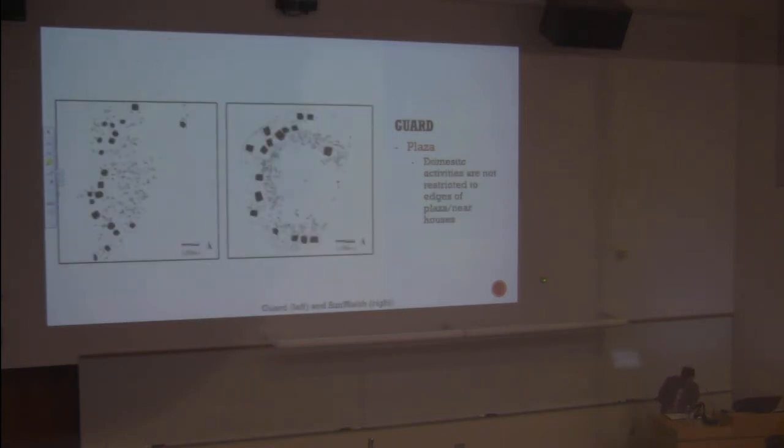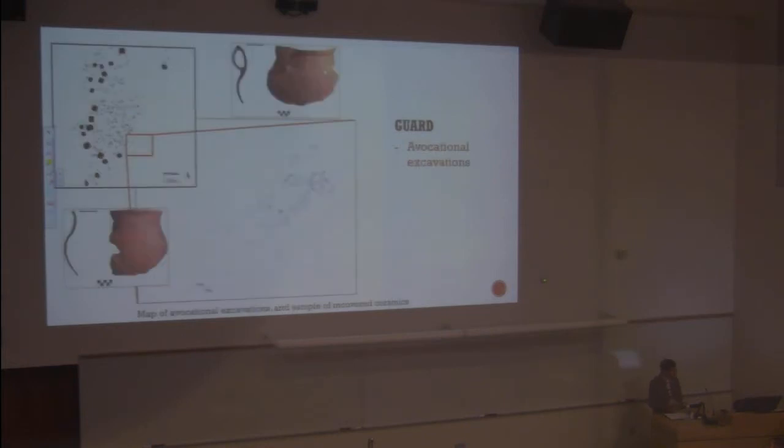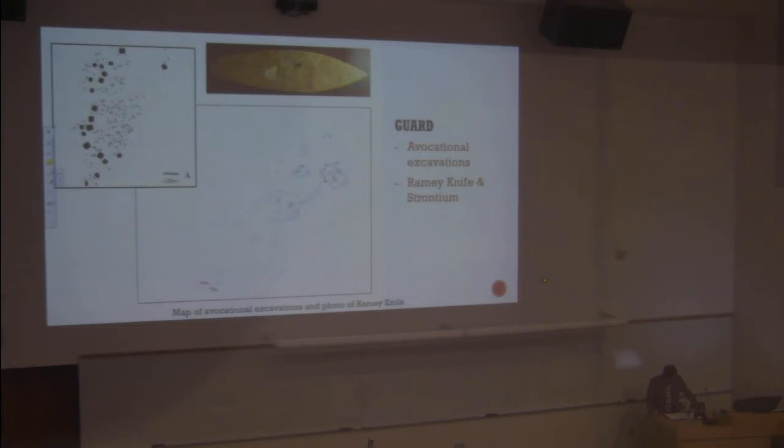So what do I see? I see storage and refuse pits throughout the plaza. Not just along an outer ring, like you do at Sunwatch. The exception being that center post and offering. So this map is real, it just is very different than Sunwatch, especially related to the plaza. The landowner excavated avocationally in the 1980s in the southeast portion of the site. He uncovered 21 burials. To date, our excavations haven't uncovered any. This is where the Ramey knife was discovered, found held in the hand of a young man. It was made of kaolin chert.